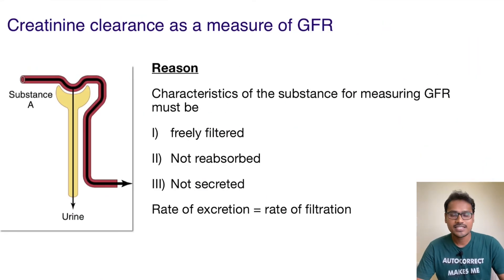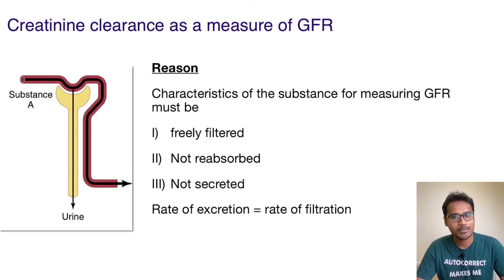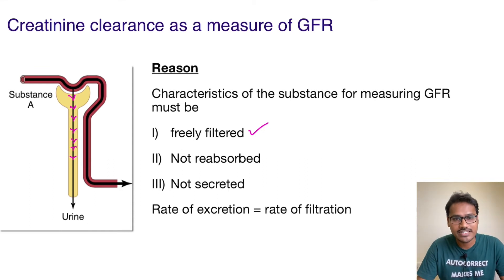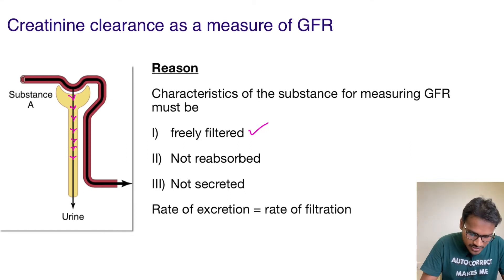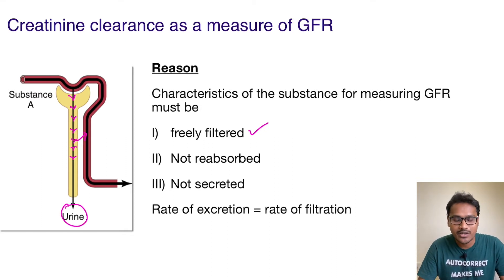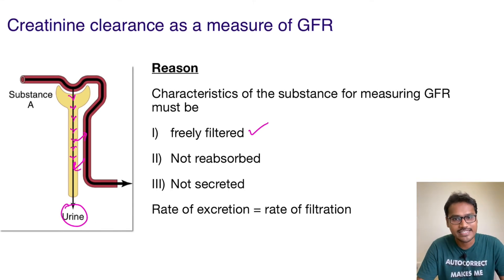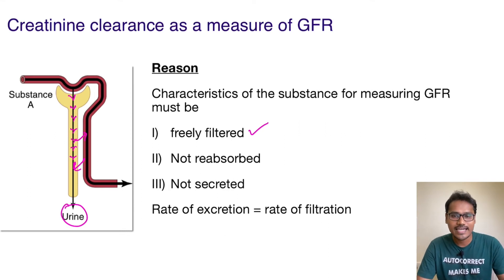For any substance to qualify as a measurement of GFR, it should have the following properties: it should be freely filterable — only filtration should happen. Because if I want to calculate glomerular filtration rate, that substance should be freely filtered. Not only that, it should not be reabsorbed, because if it is being reabsorbed the urinary amount will get reduced. And it should not be secreted either, because if it is getting secreted the urinary amount will increase. So it should be freely filterable, but not reabsorbed and not secreted.